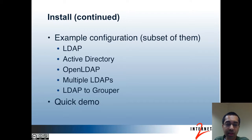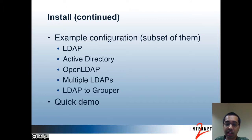These are a subset of the example configuration types that come with the PSP. The LDAP configuration example is the most basic LDAP provisioning example and should apply to any directory server. There's an Active Directory example that accounts for a typical AD environment, such as the use of the attribute sAMAccountName. There's an OpenLDAP example built on top of the basic LDAP example with more provisioning options, including the member attribute being a required attribute in the groupOfNames object class. There's also an example of provisioning to multiple LDAP directories, useful if you want to provision to an LDAP directory that's not one of your Grouper subject sources. Finally, there's an example of provisioning from LDAP to Grouper — if you have groups maintained in LDAP that you want synced to Grouper.